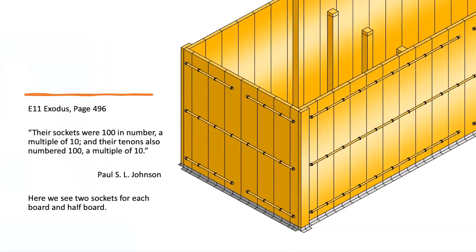Their sockets were 100 in number—a multiple of ten—and their tenons also numbered 100, a multiple of ten. Here we see two sockets for each board and for each half board.